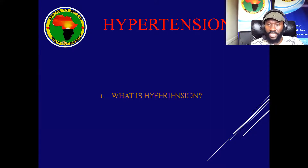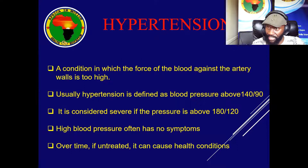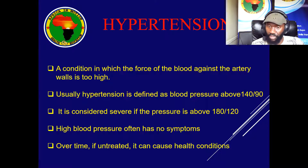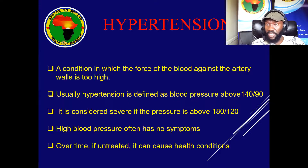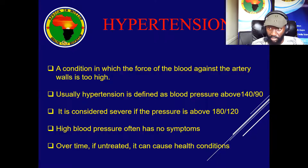To summarize what we've seen: hypertension is a condition in which the force of the blood against the walls of the arteries is too high. Normal blood pressure should not exceed 140 over 90 — that is the reference value. If it goes to 180 over 120, it is an emergency situation requiring immediate intervention, and we call it severe hypertension. Many people will have hypertension without knowing it — they go about their activities normally until they check randomly and find high blood pressure. If left untreated, it causes serious complications.